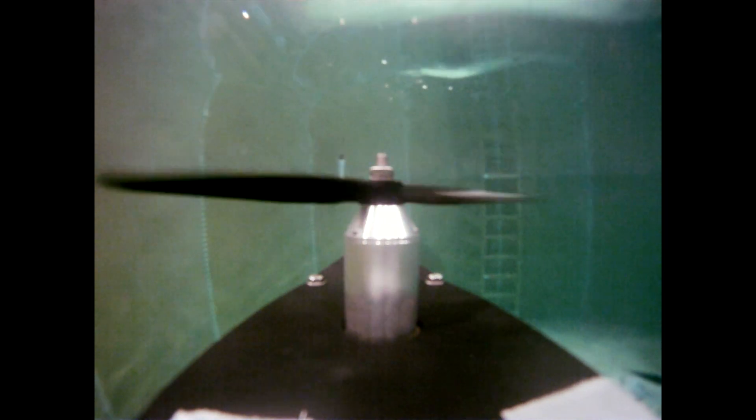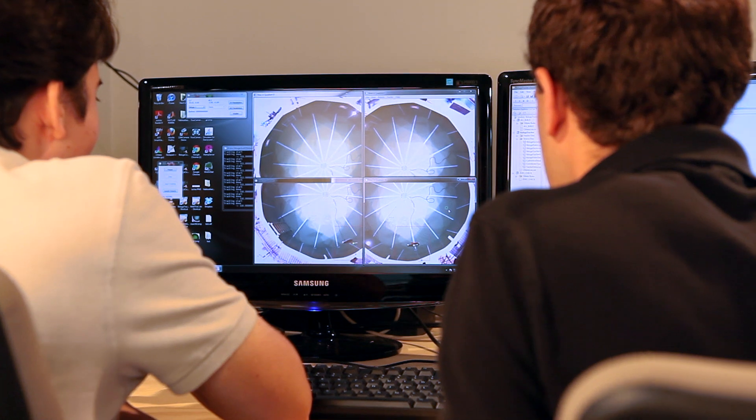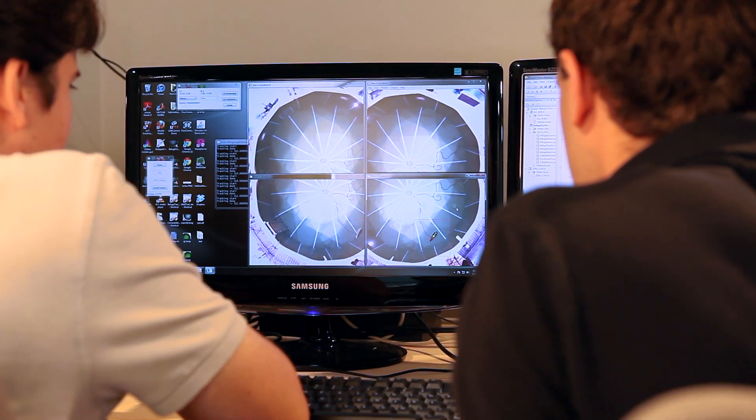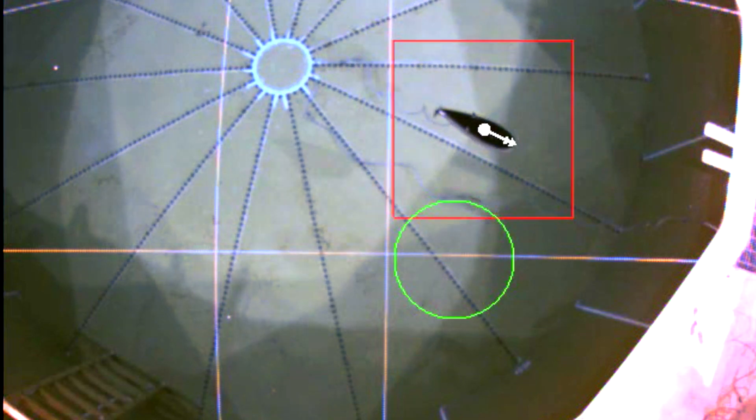We use four cameras hooked up to image processing software and a computer to give us the real-time position of the Beluga in the tank. And this allows us to close the loop, which is our goal in the control system. So we know where we are and we know where we have to go, and that allows us to know how to get there.